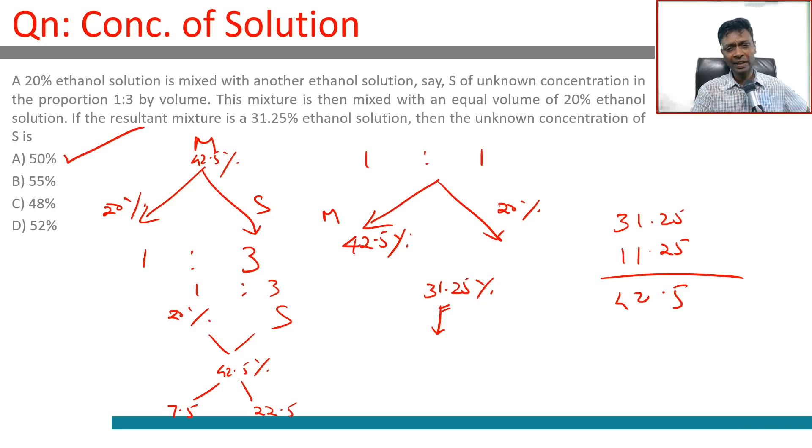which is 50%. The key thing here - do the second thing first and then go to the first one. The idea is it is mixing in the ratio 1 is to 1, so the final solution should be bang in the middle. So this should be the midpoint between these two. Straightaway get the mixture's concentration, stick that in, use your allegation method, you're through.